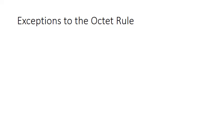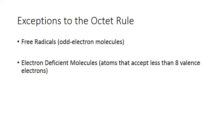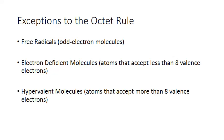The exceptions to the octet rule tend to fall into one of three categories. These are free radicals — molecules that have an odd number of electrons. Electron-deficient molecules — molecules that have atoms that accept less than eight valence electrons. And finally, hypervalent molecules — molecules that have atoms that accept more than eight valence electrons.